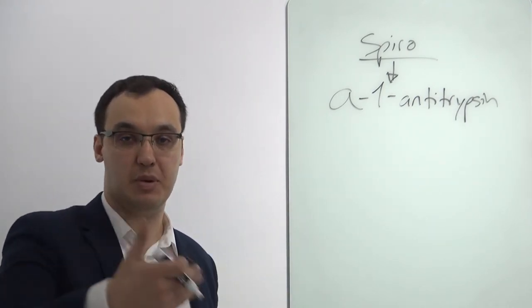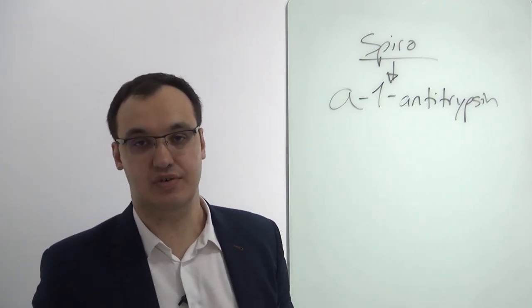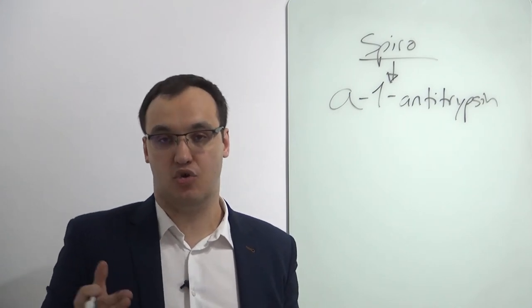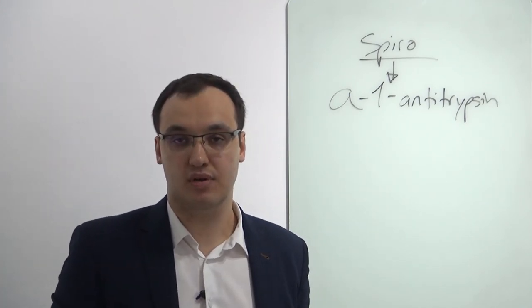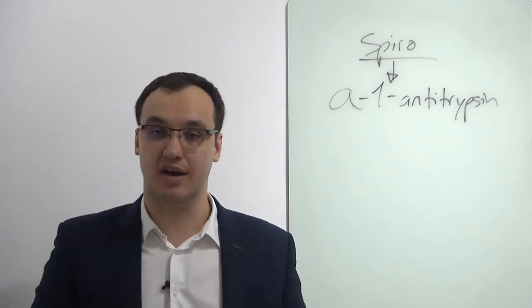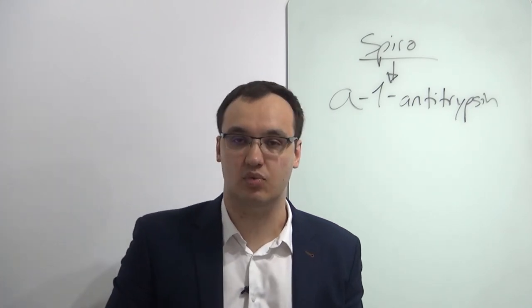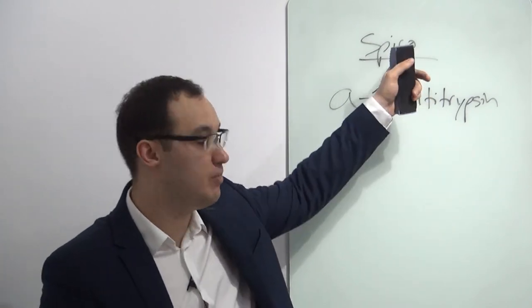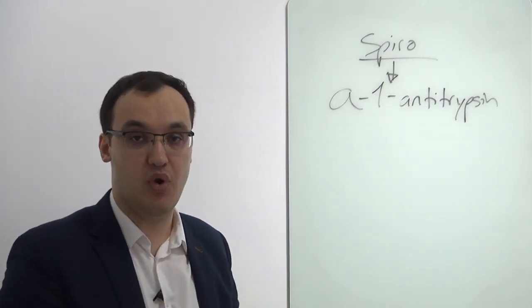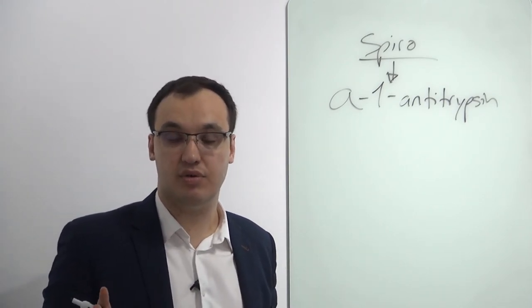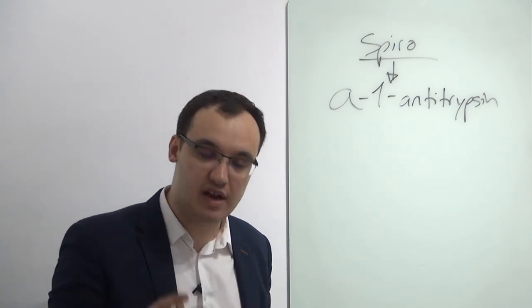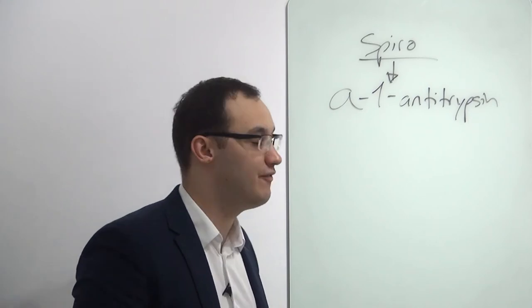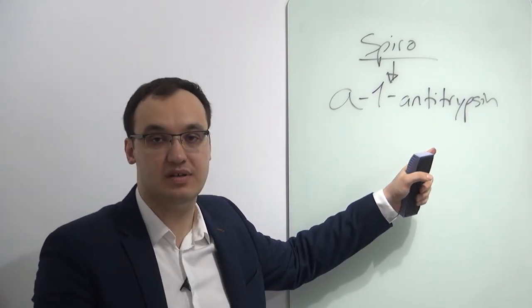Alpha-1-antitrypsin deficiency is a genetic disease that you inherit from your parents and causes you to get COPD much more easily. This can be seen in young patients. Because as said in other videos, smoking is the most common cause of COPD — 80% of COPD patients smoke. But there exist patients who did not smoke, who are young, and they get COPD. The criteria to use is: permanent airflow obstruction plus symptoms of COPD. That's it. Then you do an alpha-1-antitrypsin test — that's the only lab test that can diagnose something related to COPD.